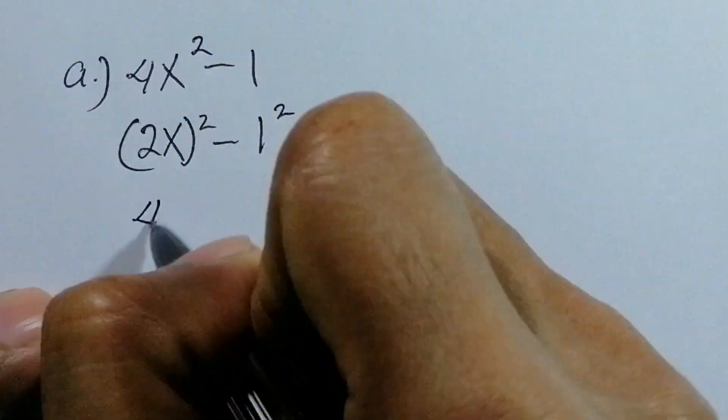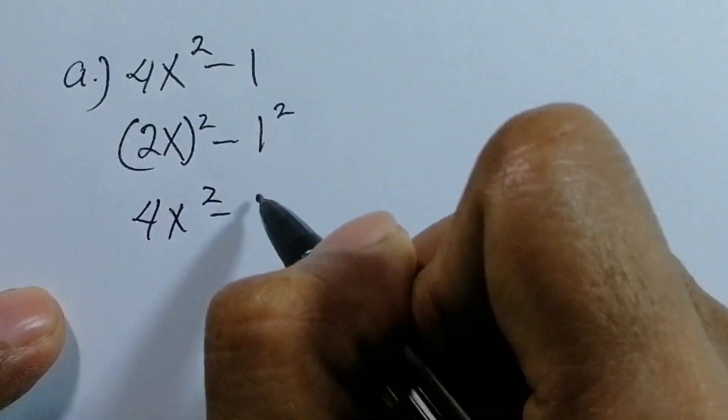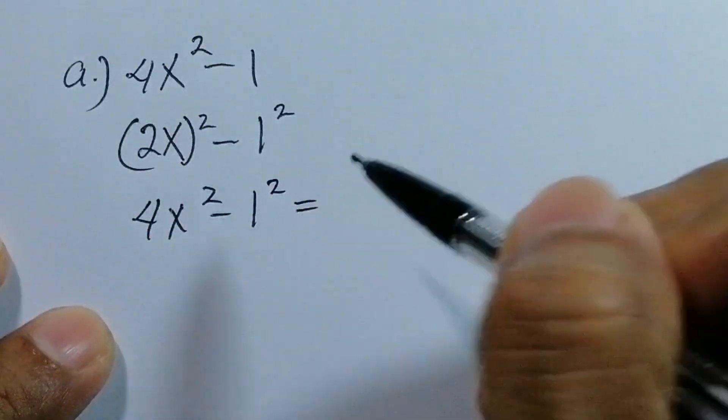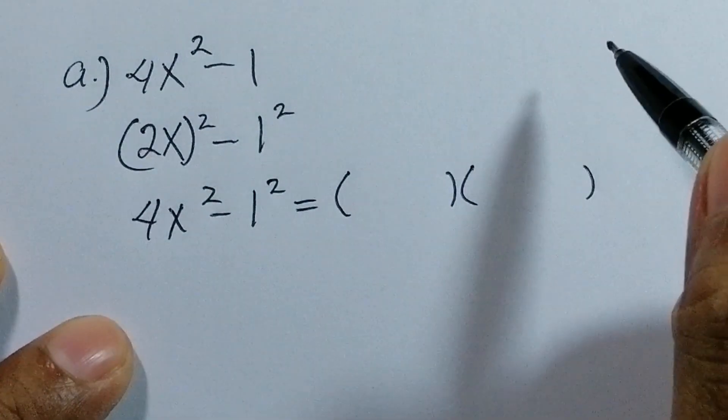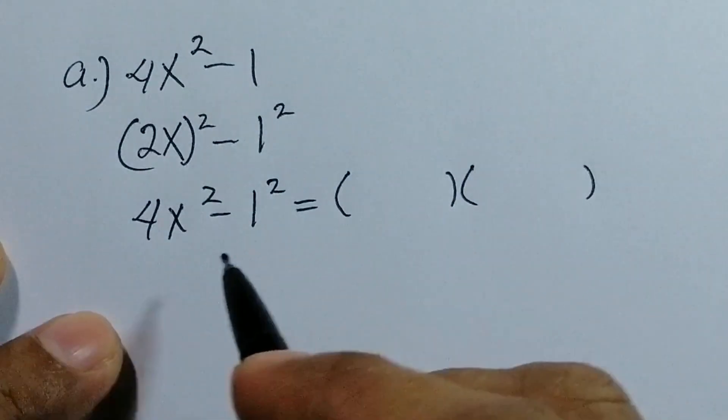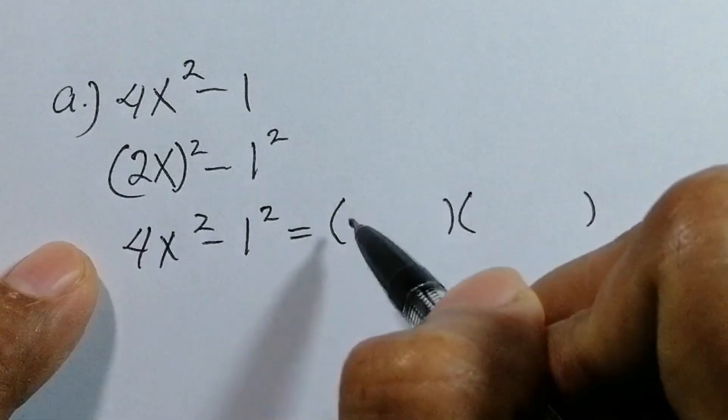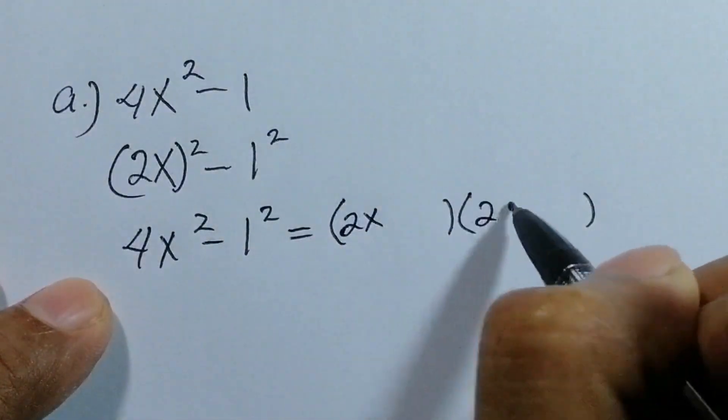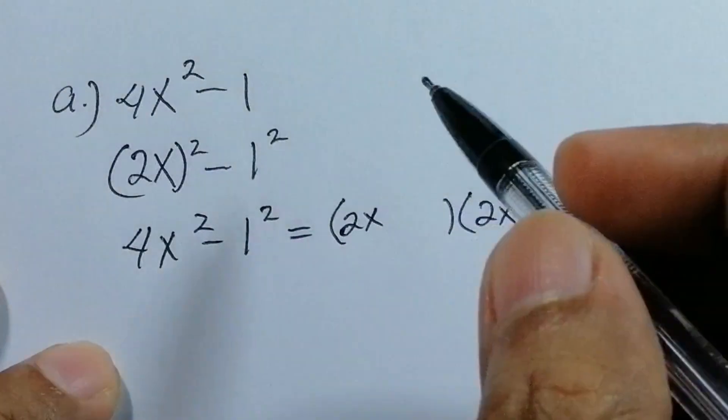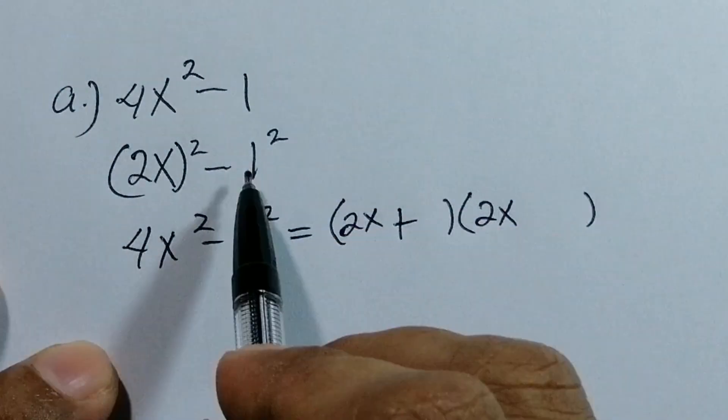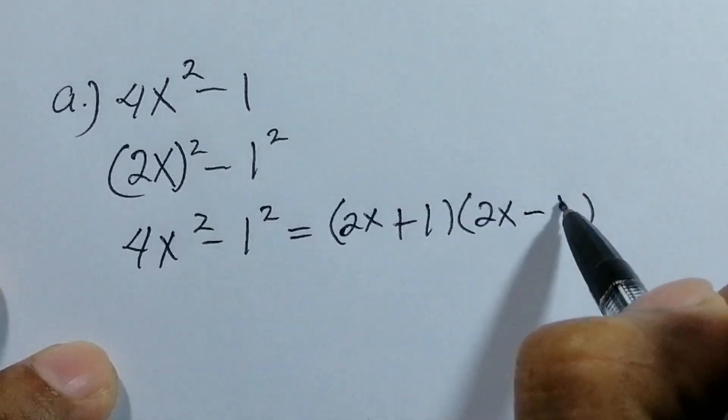Thus, 4x² - 1 equals, using the difference of two squares formula: (2x + 1)(2x - 1).